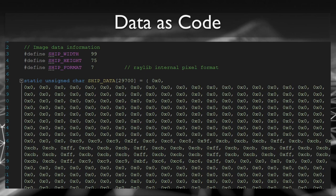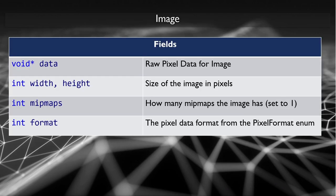Once you have this data, you can use it to fill out an image structure. The data you get will go into the data field. You have the height and width as hash defines that you can set. You have the format that you can set. There's an additional field called mipmaps that you need to set to one.